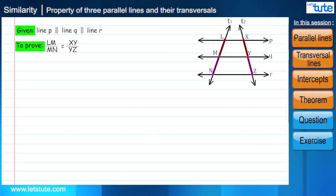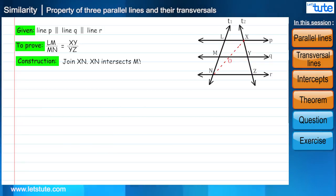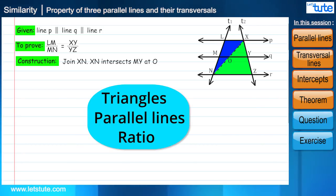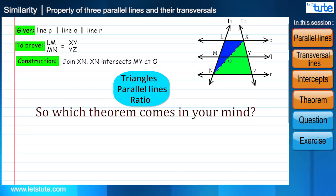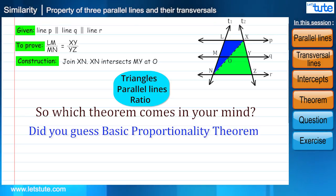So how are we going to prove this? If we will join XN, we will get two triangles. Now here we have a triangle and a pair of parallel lines. So which theorem comes to your mind which deals with all these and ratios of the sides of the triangle? Did you guess Basic Proportionality Theorem? Yes, that's correct. Let's see.